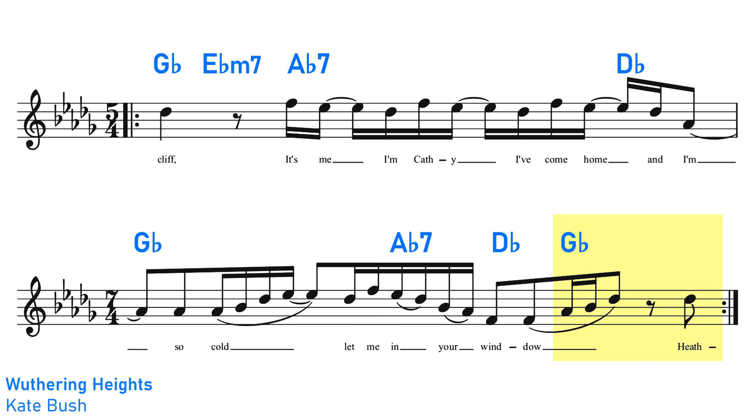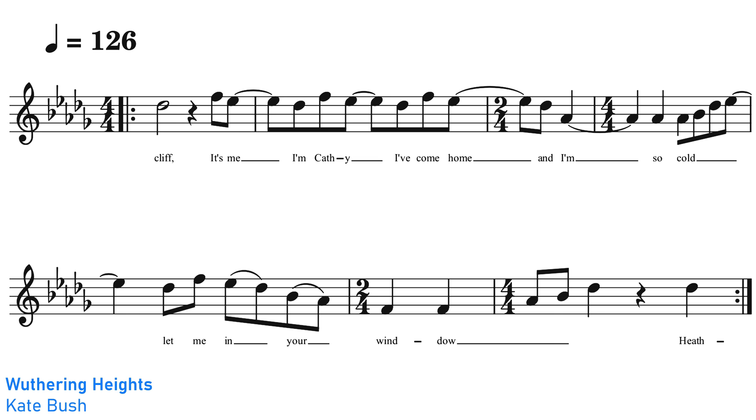And as you would have noticed, we get some unusual time signatures going on here. Depending on whether you count the tempo at a slower 63 BPM or a faster 126 BPM, we either have alternating bars of 5-4 and 7-4, or we have a mix of 4-4 and 2-4 in the pattern of two bars of 4-4 followed by one bar of 2-4.